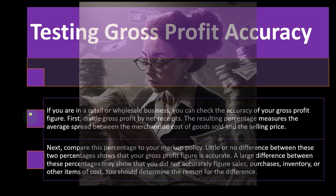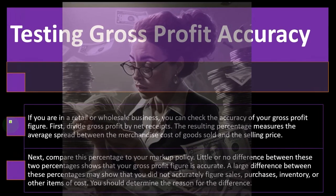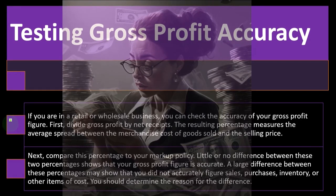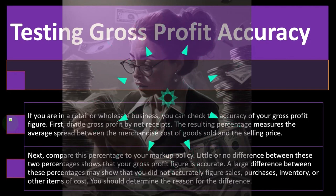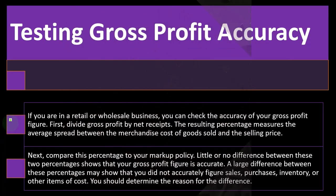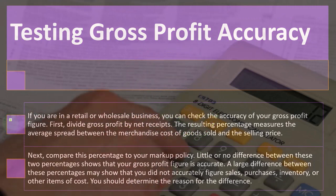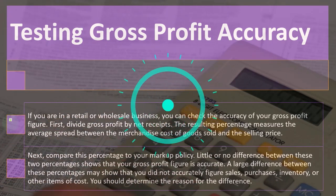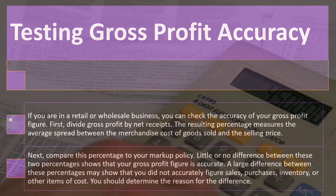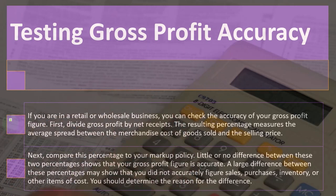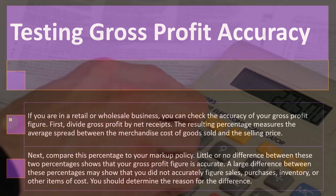Consider whether the gross profit ratio is similar to the ratio you usually have for your markup on inventory. If you simply buy and sell inventory, you would expect to have a similar relationship between the totals at the end of the year, because sales result from selling inventory and cost of goods sold represents the cost of that inventory. If you have a more complex business — with other income or fluctuating prices and costs — a direct comparison will be more difficult.